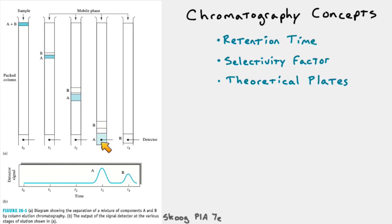If we have a detector here, and we're measuring things as they elute, we would see A come out first at some time, and then a little while later, B, which has been retained by the column a little more, B will elute.